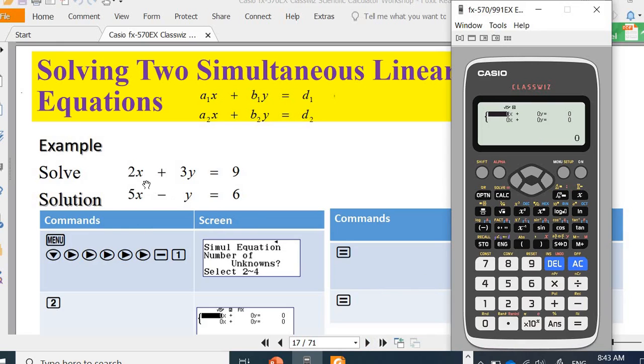I would like to solve 2x plus 3y equal to 9, 5x minus y equal to 6. So what I'm going to do is just key in the coefficient for your simultaneous equation.